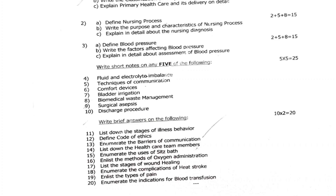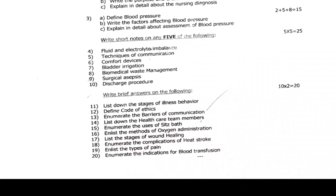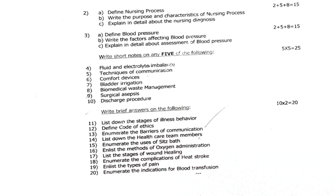Short notes: 4th: fluid and electrolyte imbalance. 5th: techniques of communication. 6th: comfort devices. 7th: bladder irrigation. 8th: biomedical waste management. 9th: surgical asepsis. 10th: discharge procedure. Brief answers: 11th: list the stages of illness behavior. 12th: define code of ethics. 13th: enumerate the barriers of communication. 14th: list the healthcare team members. 15th: enumerate the uses of sitz bath. 16th: enlist the methods of oxygen administration. 17th: list the stages of wound healing. 18th: enumerate the complications of heat stroke. 19th: enlist the types of pain. 20th: enumerate the indications for blood transfusion.